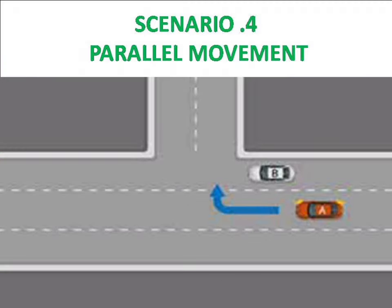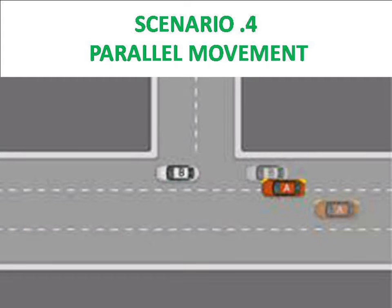Scenario 4: parallel movement. A driver traveling in a straight line has priority over the driver wishing to change direction. In the photo, a red vehicle and a white vehicle are shown — the white vehicle is going straight and the red vehicle needs to turn right. The white vehicle has priority, so the red vehicle must wait until the white vehicle passes the turning point, then turn right.